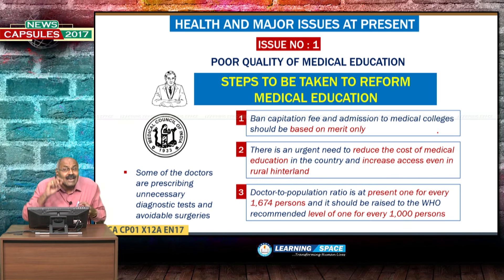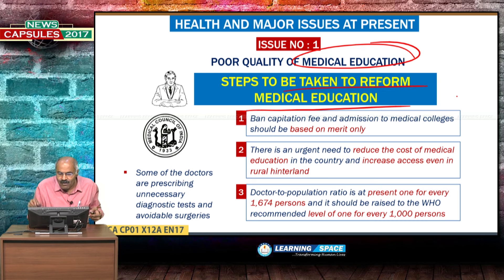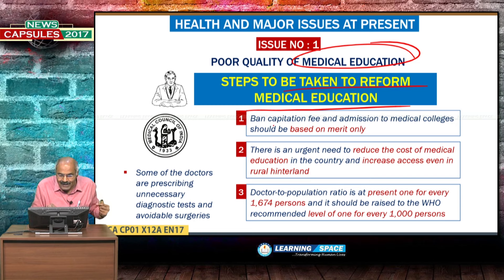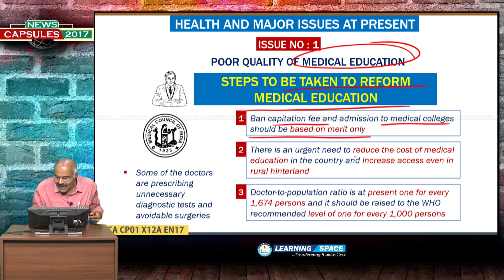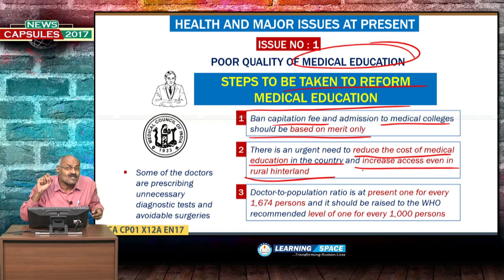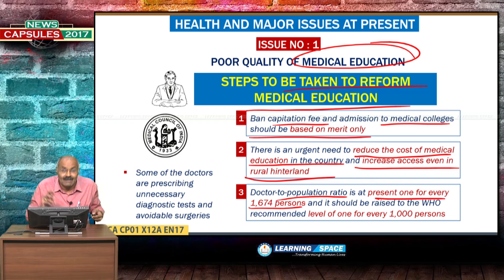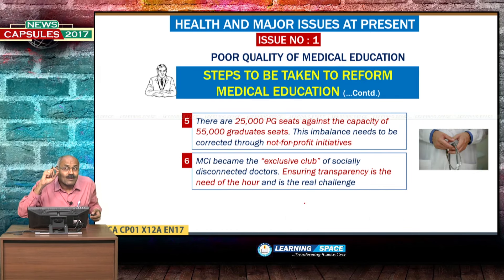Now look at the major issues at present. First and foremost is poor quality of medical education — steps must be taken to reform it. Capitation fees should be banned and admission to medical colleges must be purely merit-based. There is an urgent need to reduce the cost of medical education and increase access even in rural hinterlands. The doctor-to-population ratio is currently one for every 1,674 persons, whereas WHO guidelines say there must be one doctor for every 1,000 persons. Post-graduation seats must also be increased.